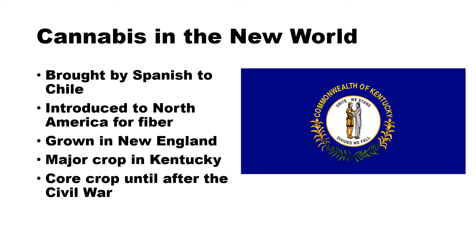Cannabis was introduced to North America for fiber. In fact, in some places in New England there were requirements that each person raised a certain number of acres of hemp. It was used for both rope and sails for all of those wooden sailing ships. As the westward expansion took place, it was a major crop in Kentucky and a core crop throughout that area until after the U.S. Civil War.